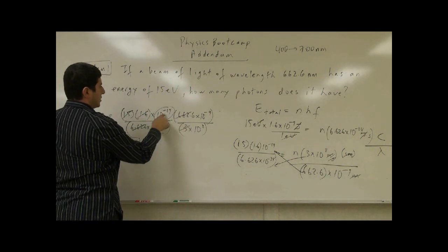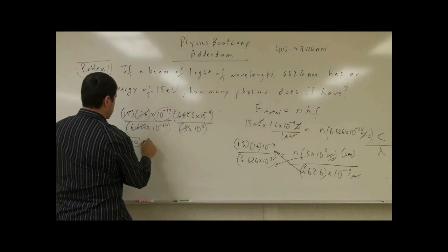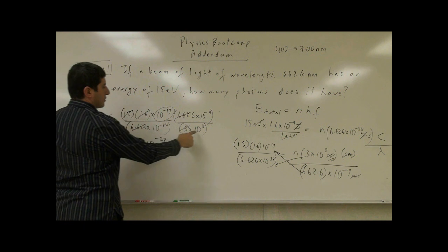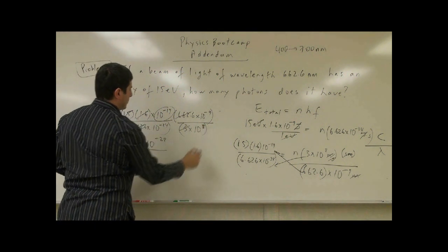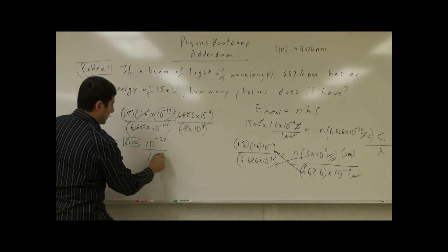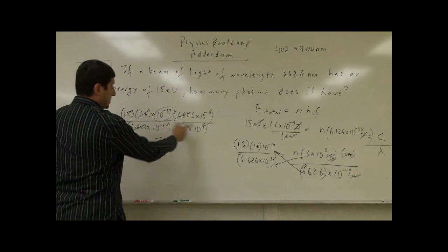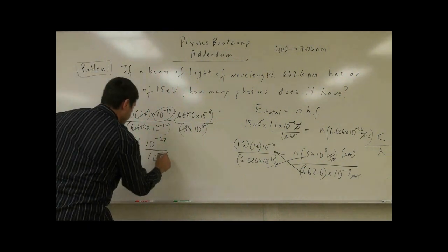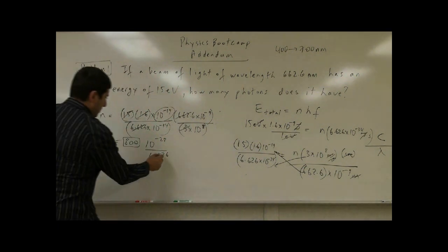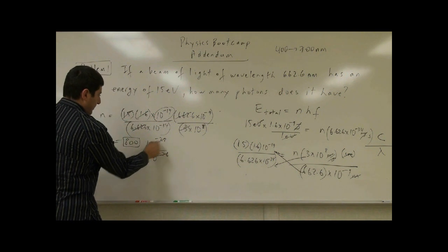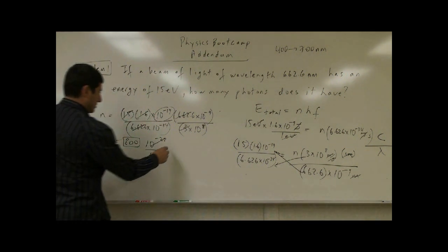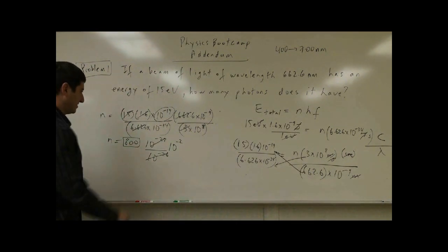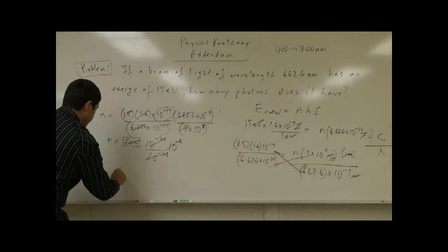And now, how do we do the powers of 10? 10 to the minus 19, 10 to the minus 9 gives you 10 to the minus 28. 10 to the minus 34, 10 to the 8 gives you 10 to the minus 26. You subtract 8 from 34, you get 26. Now, 10 to the minus 28 over 10 to the minus 26 is 10 to the minus 2. 800 times 10 to the minus 2 gives you N is 8. So, 8 photons.